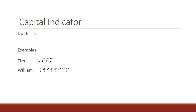In Braille, we have indicators. These are used to tell the Braille reader something that a print reader can see. The first indicator you will learn is the capital indicator. It is dot six and comes before the letter that is capitalized. Look at these examples: Tim and William. Notice that the capital indicator is placed before the T in Tim to signify that the T is capitalized, and that the W in William also has a capital indicator in front of it to show that the W is capitalized.